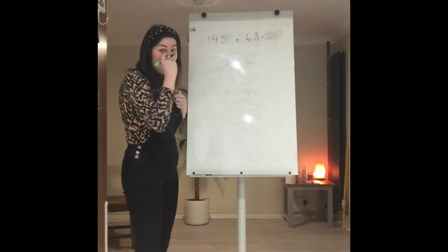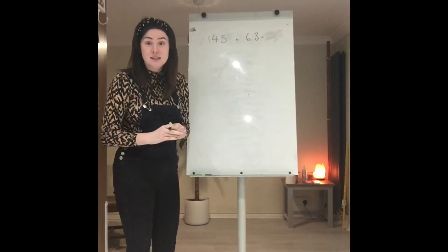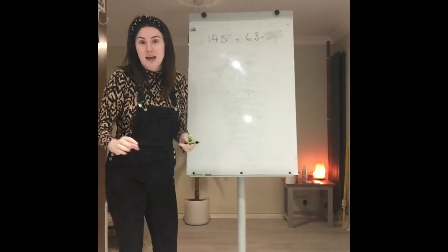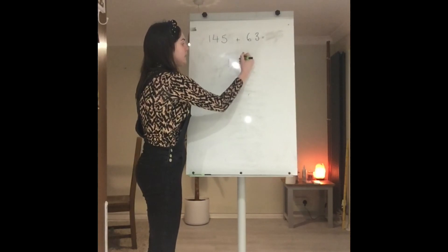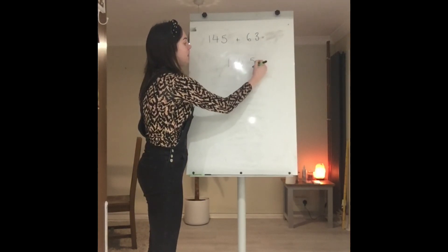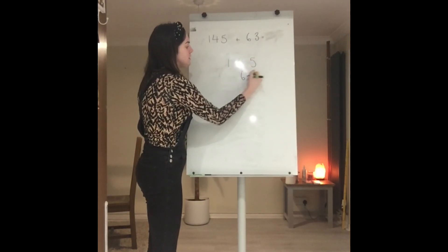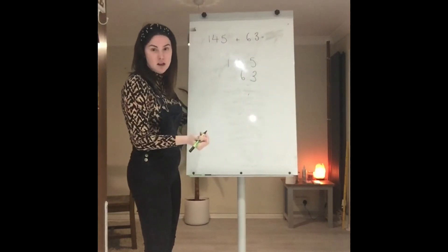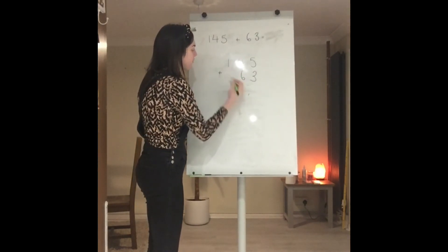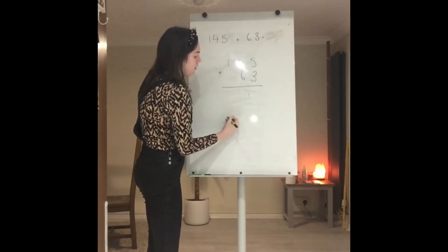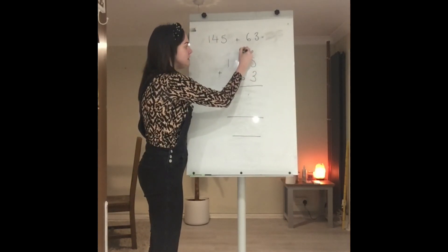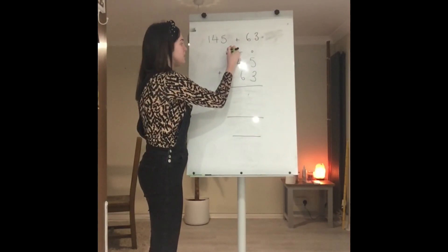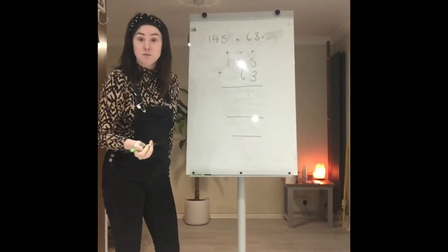My calculation is 145 plus 63. We're going to set it out in exactly the same way as we've been doing all week, making sure that our columns are nicely lined up because that makes it a lot easier for us to do. I leave myself lots of room and I make sure I've got my ones, my tens and my hundreds in case I get my columns confused.